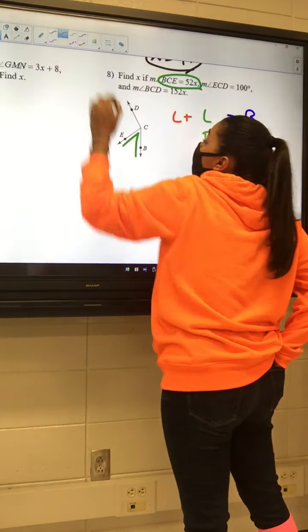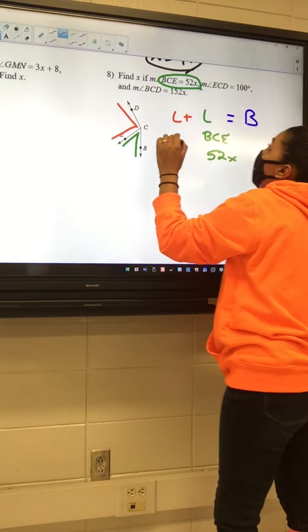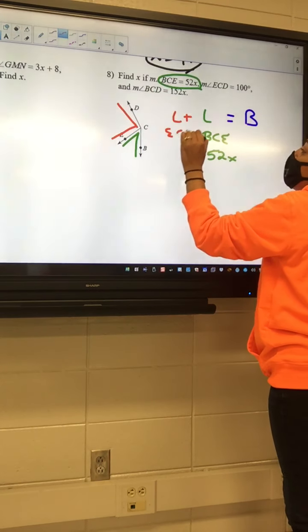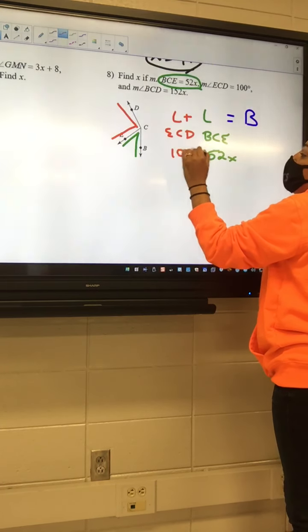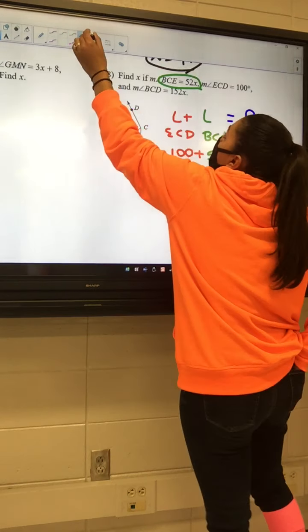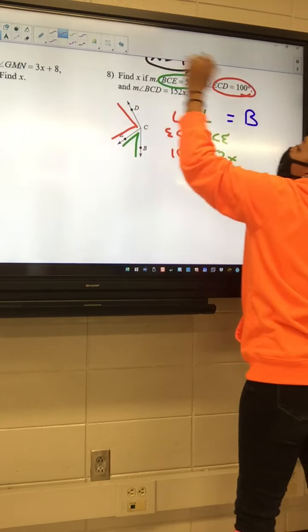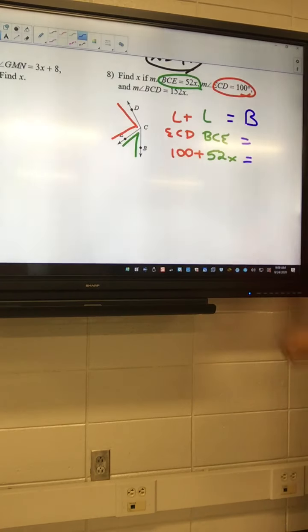So ECD is going to be 100 degrees, and that's another little one. ECD, that's 100. And my big one is going to be BCD, BCD, and that's 152.